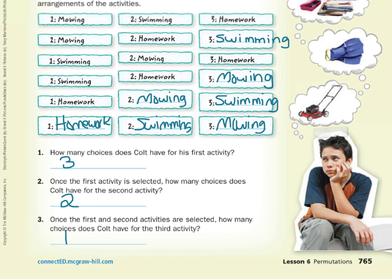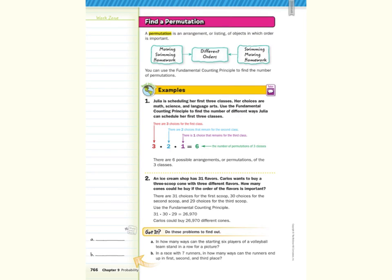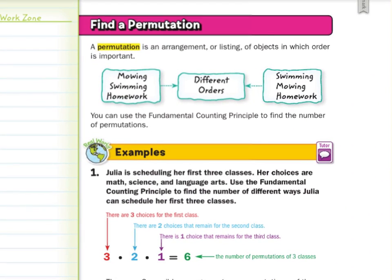To bring in the fundamental counting principle, where we would just multiply three times two times one here, you can also see where we have six outcomes. So three times two times one is also six. And that's what we're dealing with today. Our key concept today is find a permutation. A permutation is an arrangement or listing of objects in which order is important. Again, that really is important. Order is important.